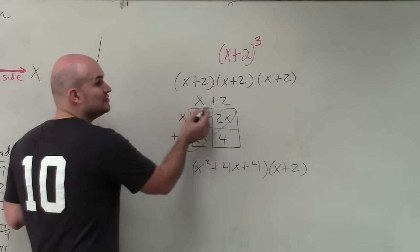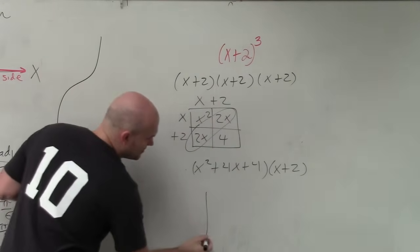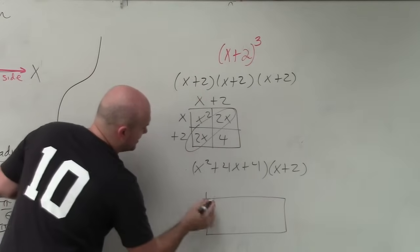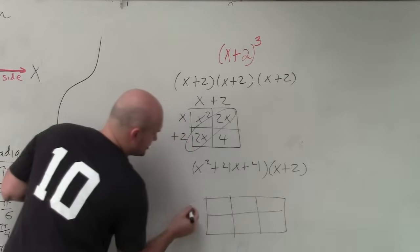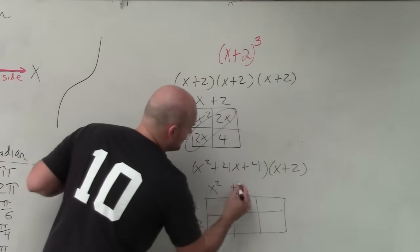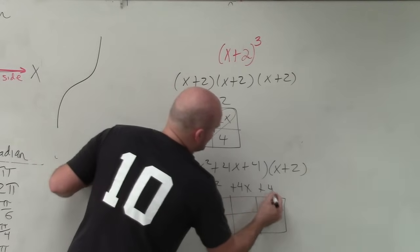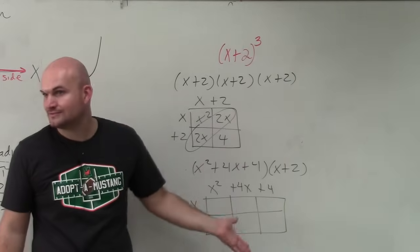But now, rather than having two terms for one side, I now need to have three terms. So you just create a little bit longer box. So I still do x plus 2, and now I do x squared plus 4x plus 4. Does everybody see what I did? Does everybody see how I did that?